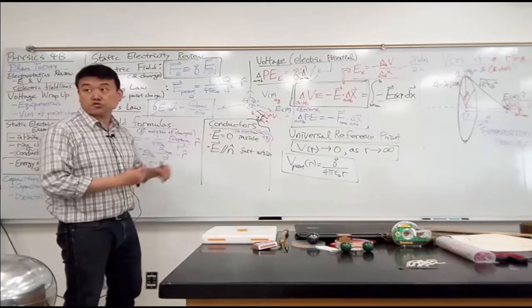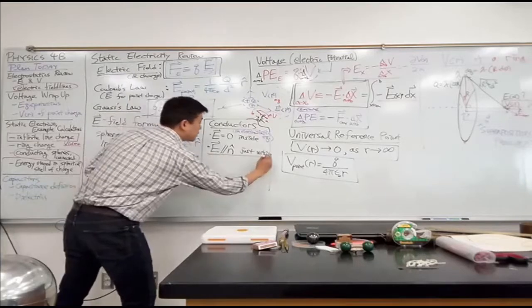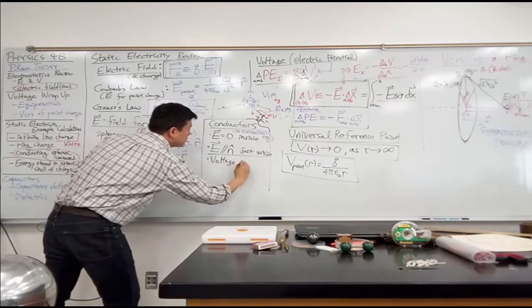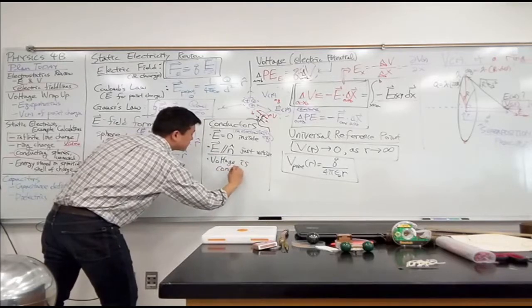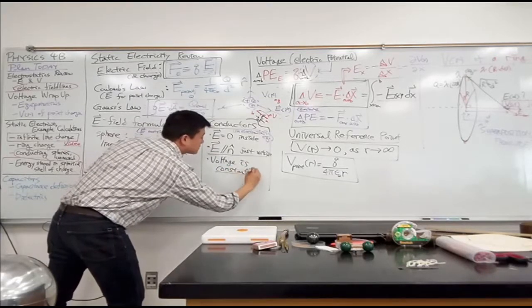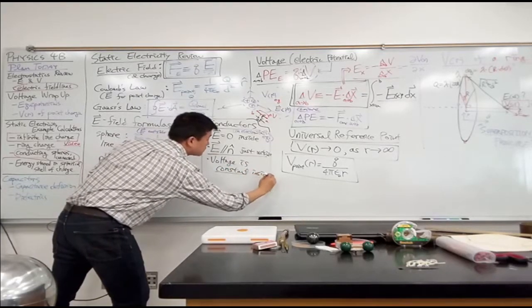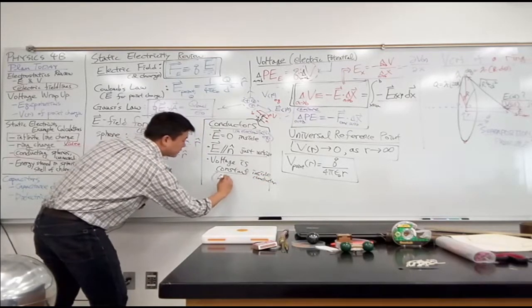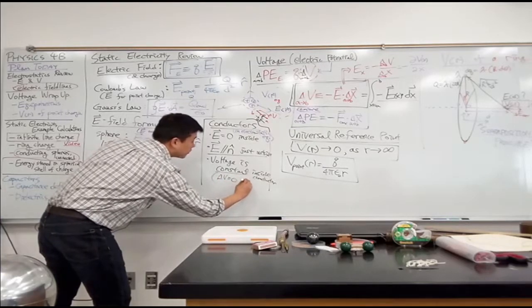So that's the third and the last rule about conductors, which is that voltage is constant inside the conductor. Or delta V is equal to zero inside the conductor.